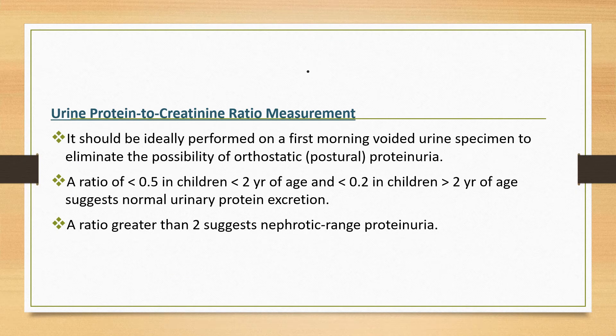Another way of measuring proteinuria is the urine protein to creatinine ratio. This measurement from an untimed or spot urine specimen has largely replaced timed collection. In children, the urine protein to creatinine ratio correlates significantly with 24-hour urine protein measurements and is useful to screen for proteinuria and longitudinally monitor protein levels. The ratio is calculated by dividing urine protein concentration (mg/dL) by urine creatinine concentration (mg/dL). It should ideally be performed on a first morning voided specimen to eliminate the possibility of orthostatic proteinuria. A ratio less than 0.5 in children under 2 years, and less than 0.2 in children over 2 years, suggests normal urinary protein excretion. A ratio greater than 2 suggests nephrotic range proteinuria.